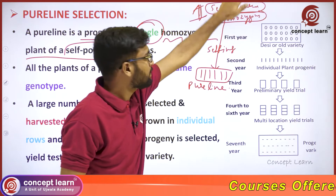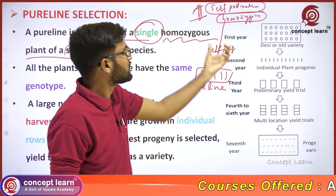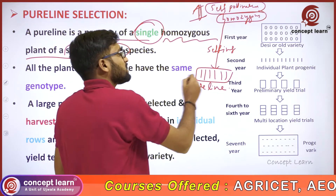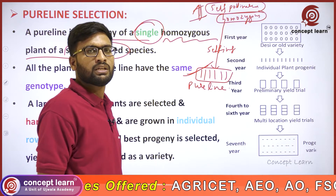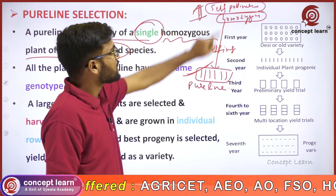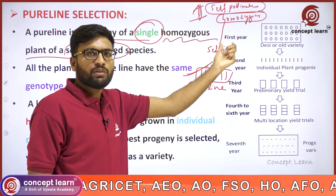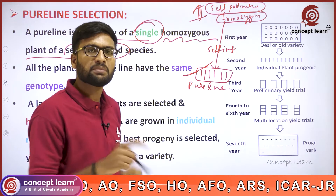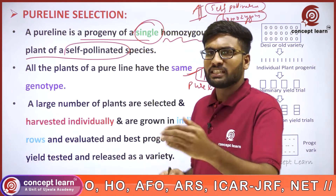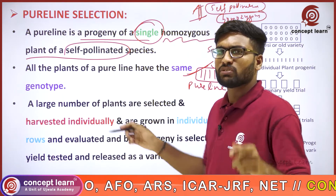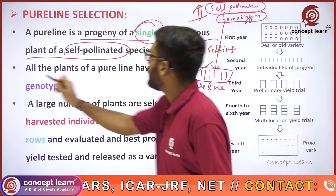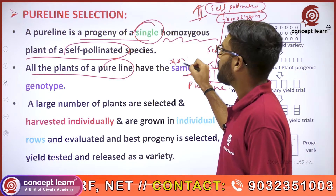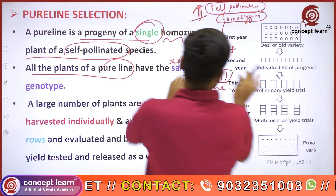A single homozygous self-pollinated plant, through selfing, produces a progeny — a group of plants. Pure line is this progeny. All plants within a pure line have the same genotype.